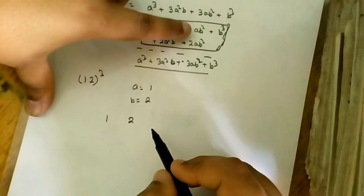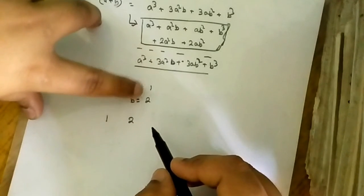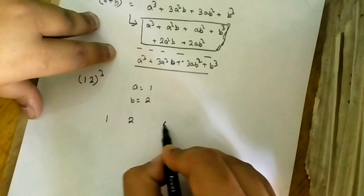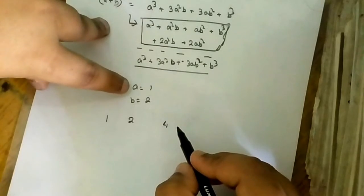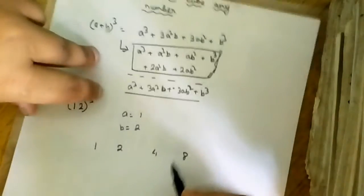Now ab square, ab square means 1 into 2 into 2, 2 into 2, 4 into 1, 1. And now b cube, b cube means 2 cube, 2 cube is 8. In the second